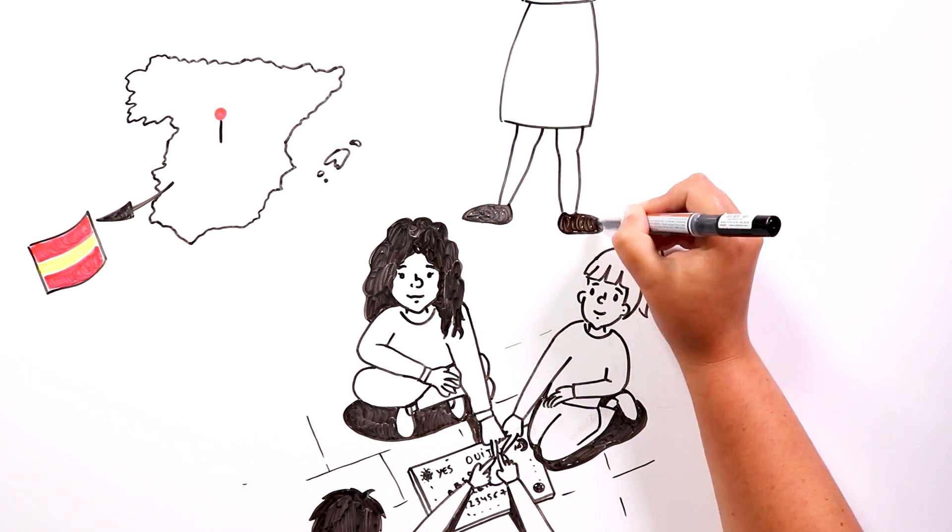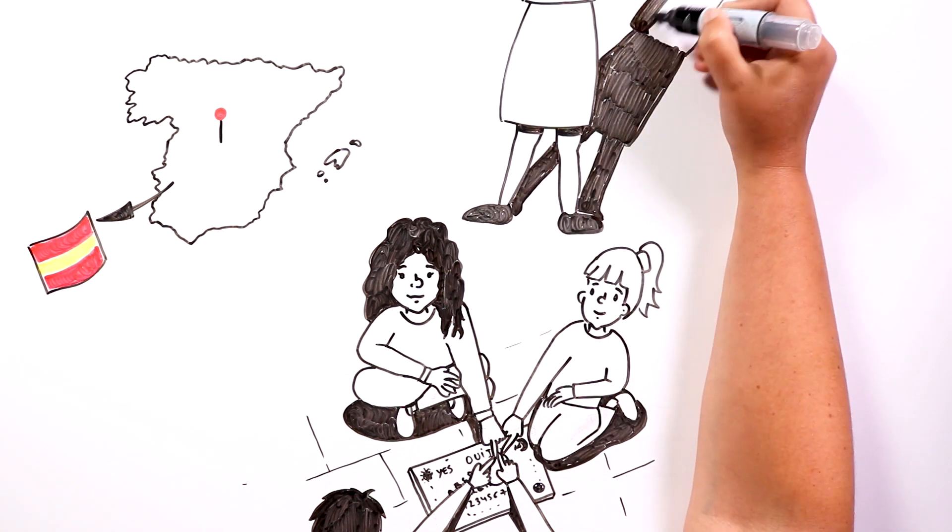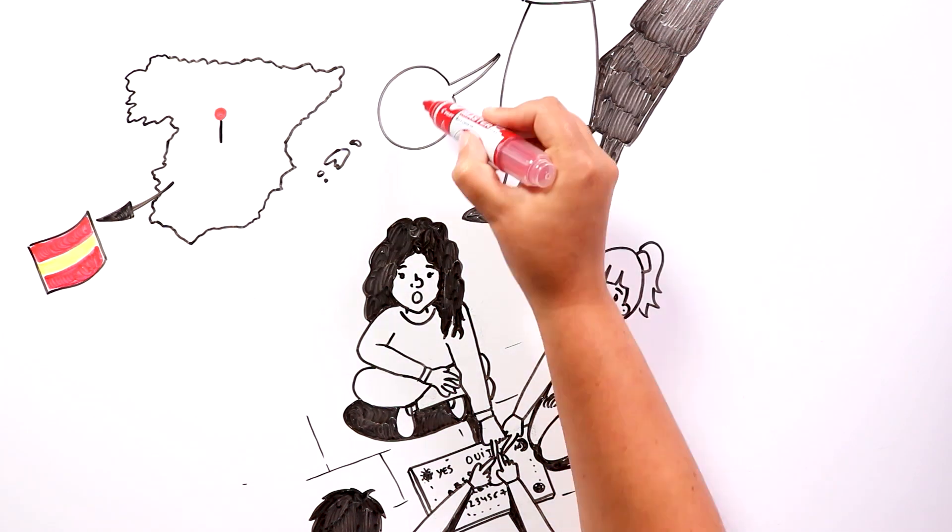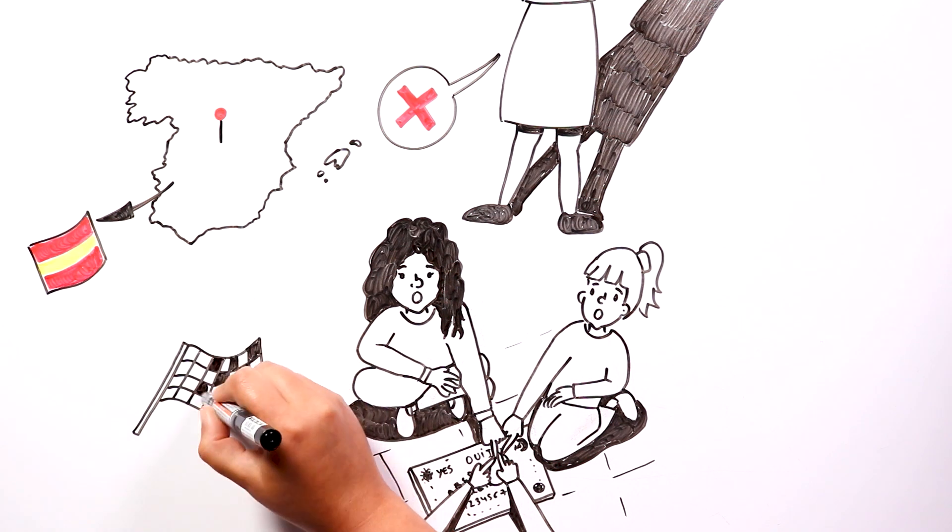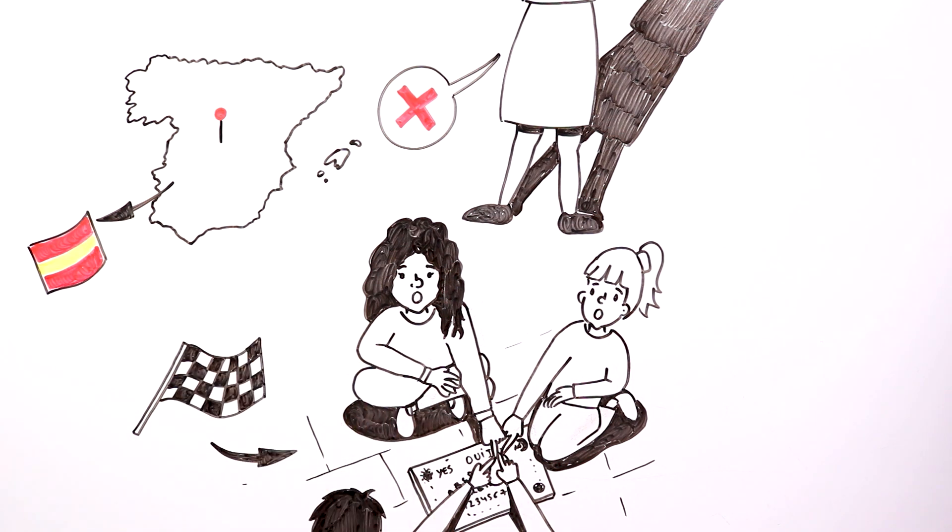However, one of the teachers discovered them. She ordered them to stop using that Ouija and go to class. So the friends had to stop short of their Ouija session without finishing it properly.